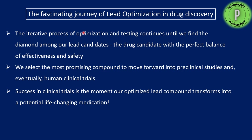This is the fascinating journey of lead optimization in drug discovery. It is an iterative process: we keep making changes in the compound, synthesize it, test it, and if activity is low, we make changes again and test again — continuing until we find the diamond among our lead candidates, a drug candidate with the perfect balance of effectiveness and safety. By doing lead optimization, we select the most promising candidate to move forward into pre-clinical studies and eventually human clinical trials, where success transforms our optimized lead molecule into a potential life-changing medication.